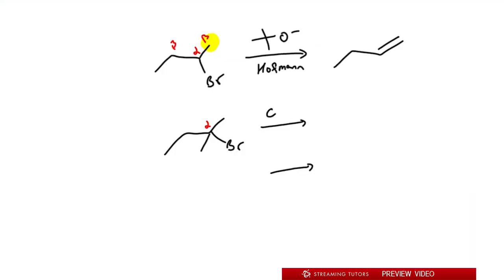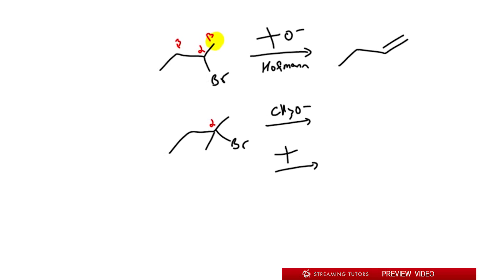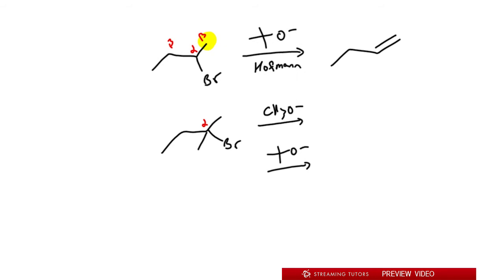For a tertiary alkyl halide, the same idea applies. With a small base or a bulky base, we look at the beta carbons. For a tertiary compound there are three beta carbons, but notice two of them are the same — both methyls. If they're the same you don't need to show the double bond in both places. We have two methyl beta carbons and one internal beta carbon with two H's. For Zaitsev we pull from the two-H beta carbon and make the more substituted alkene.